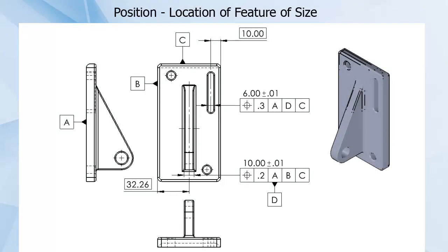As a second example, and to show datum selection methods, let's look at the slot of this part. You can see the nominal location of the center plane of the slot, the width of the slot, as well as the position tolerance of the slot.